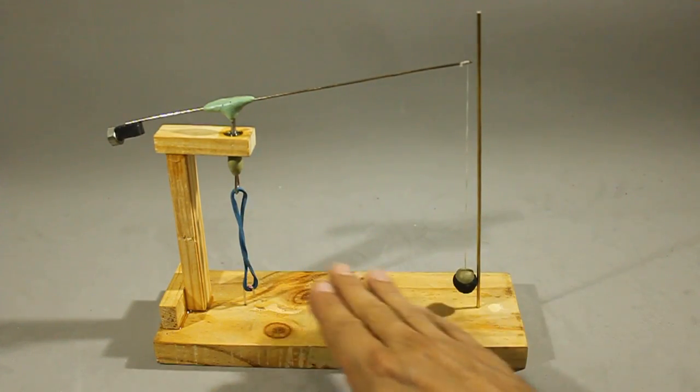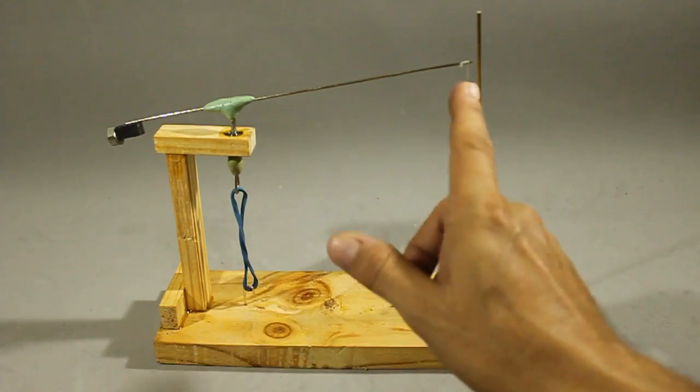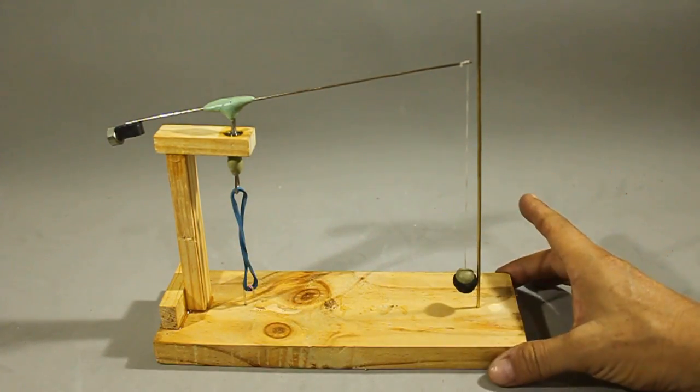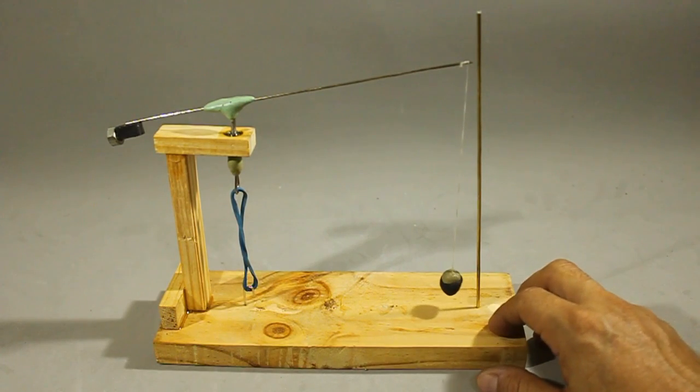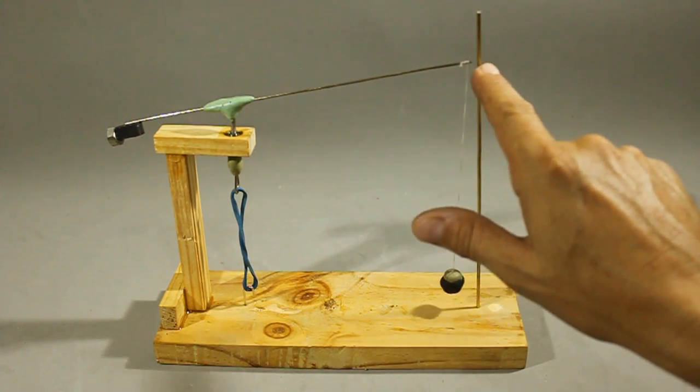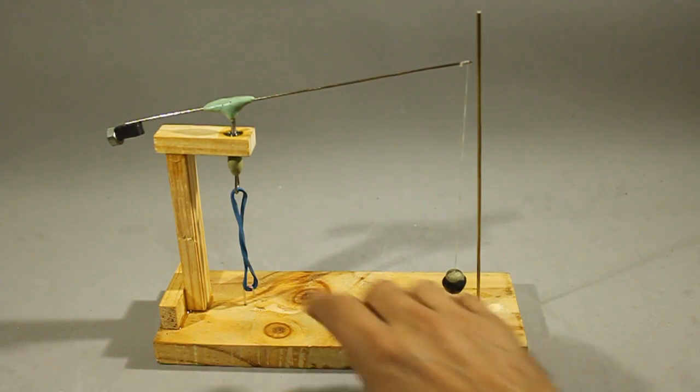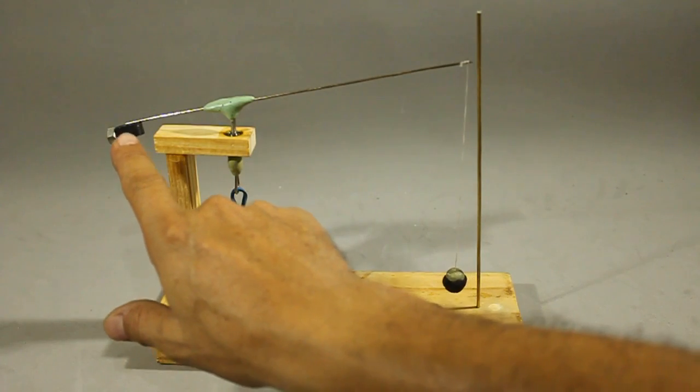The distances are not critical. You can adjust this distance and also this one. You can make the model the size you want. What is important apart from the weight is that this distance is as small as possible. And also you have to put a counterweight on this side.